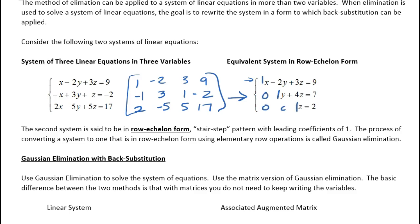What's beautiful about this is you can read off z directly. Once you know z, plug that value into the second equation and solve for y. Once you know z and y, plug those values into the first equation and solve for x. That's what we mean by back substitution — and it's called Gaussian elimination with back substitution.